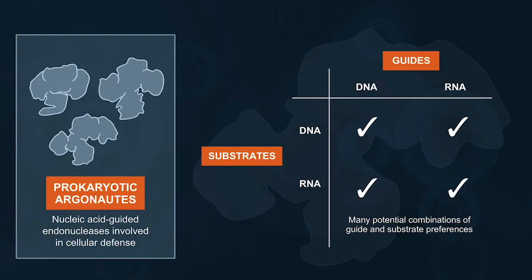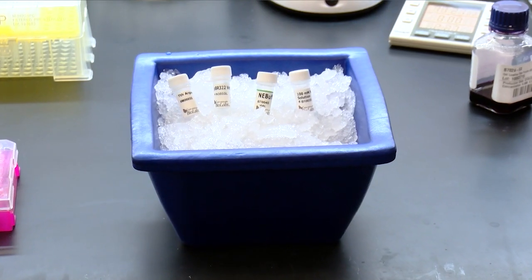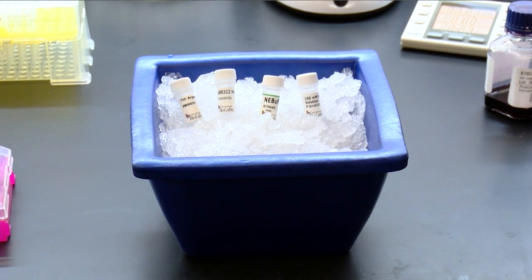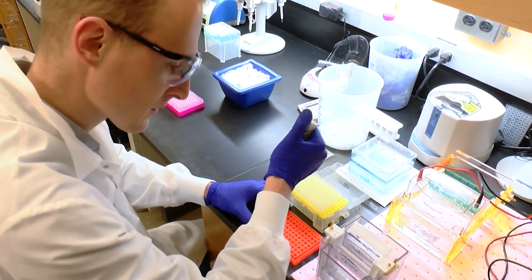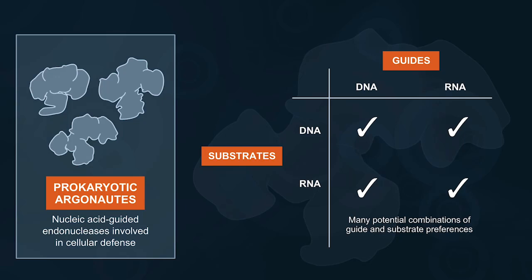And what kind of substrates do Argonauts target? So depending on the species that the Argonaut is from, they can target DNA or RNA substrates, and they can use DNA or RNA guides. So really there's four major categories that they would fall into, and some of them have some cross-reactivity between those different categories. For example, Thermus thermophilus Argonaut is a DNA-guided DNA endonuclease, but it also has some activity on RNA substrates as well.